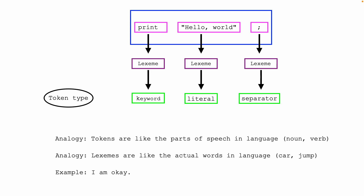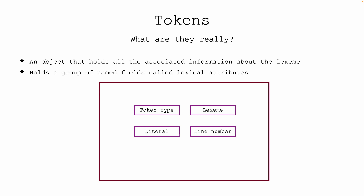In the last video we looked at token types. We know that we can break up the source code into lexemes, and each lexeme has an associated token type — for example, a keyword, a literal, or a separator. What I want to look at now is the idea of a token.